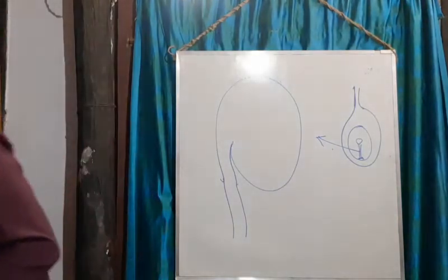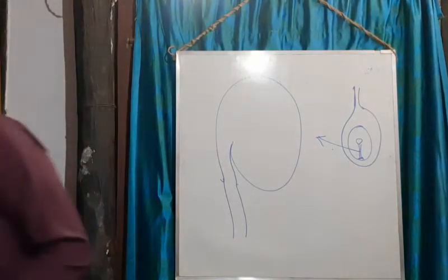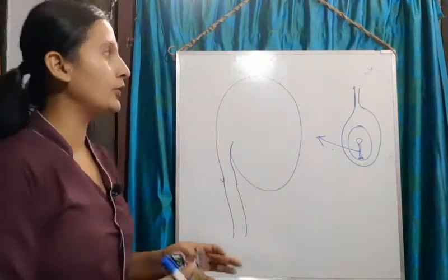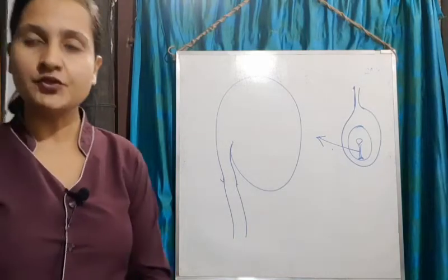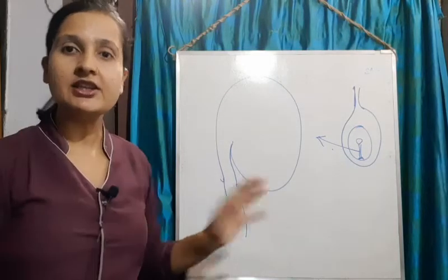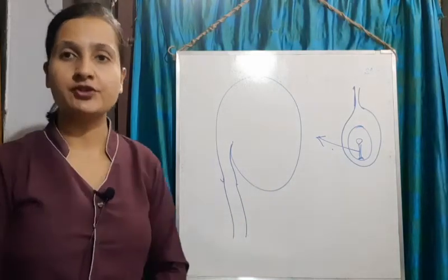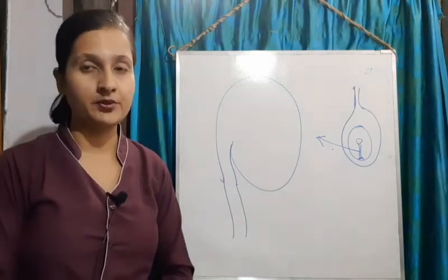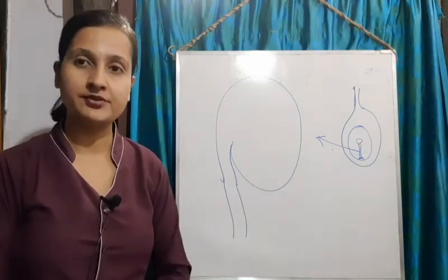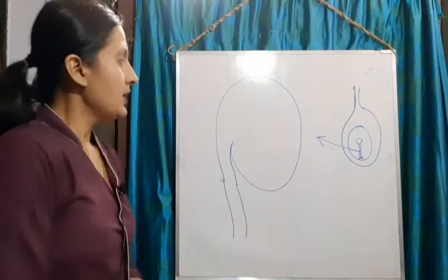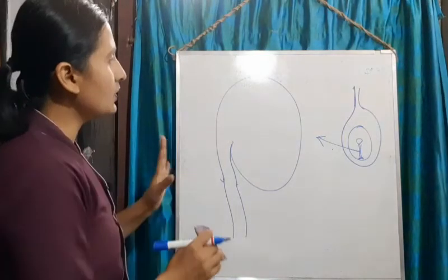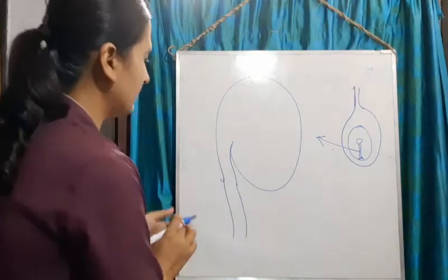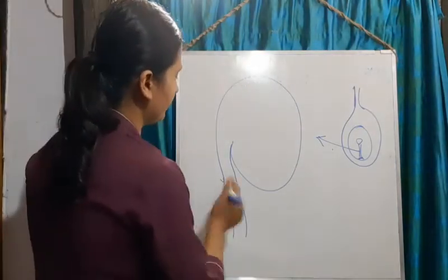The ovule is inverted in shape. Therefore it is also called an anatropous ovule, which is the type found in angiosperms. We are talking about angiosperm plants. So let us now learn the structure.